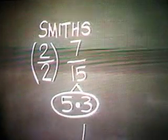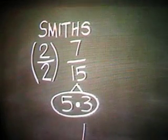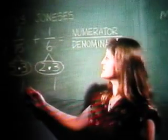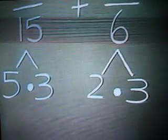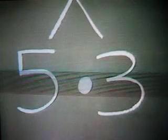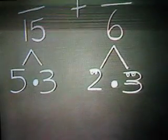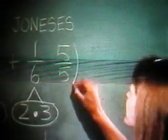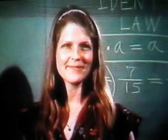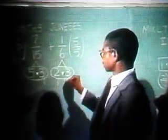Now back to the problem. The Smiths are happy at last. But jealousy is a two-edged sword — not only were the Smiths jealous of the Joneses, but now the Joneses are jealous of the Smiths. The Joneses would say: hey, we have a 3 and a 2, but those guys have a 3 and a 5 — give us a 5. So we give the Joneses a 5 over 5, and they'll be happy. Both fractions now have a 2, a 3, and a 5 in their denominators. Just one step more and we're soon to be done.